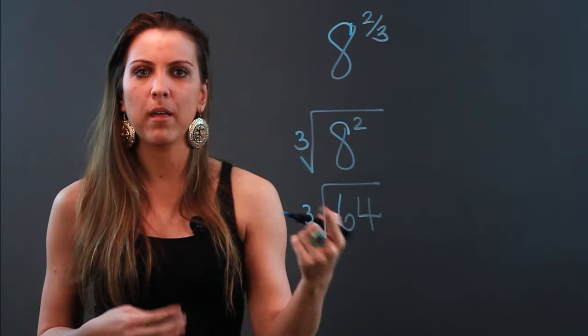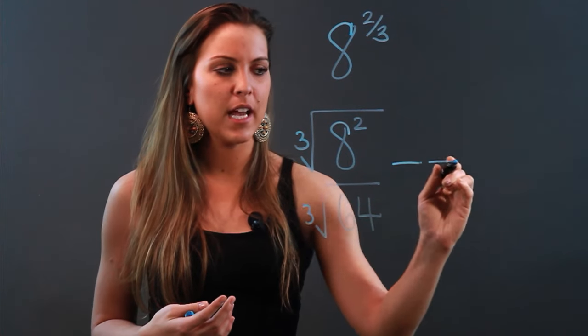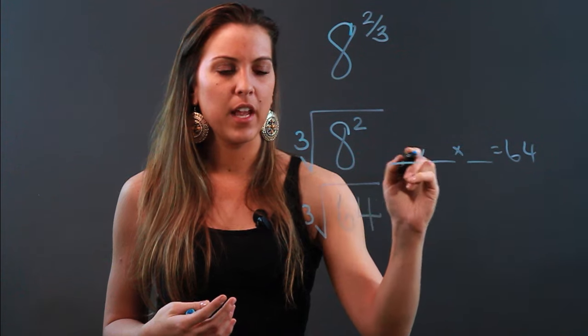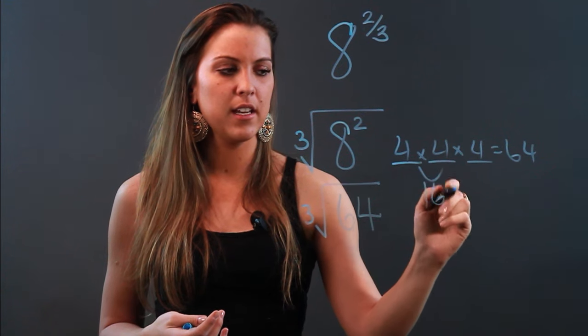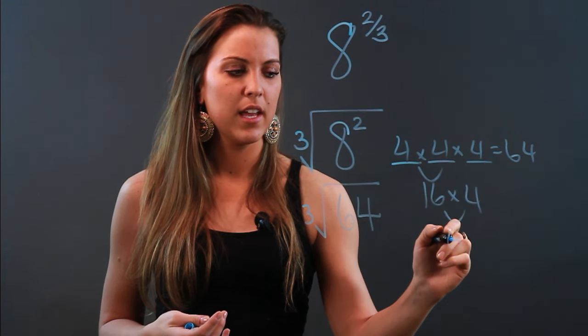So what number do you multiply by itself three times to get to 64? Think about it, and that number is 4, because 4 times 4 is 16, and 16 times 4 is 64.